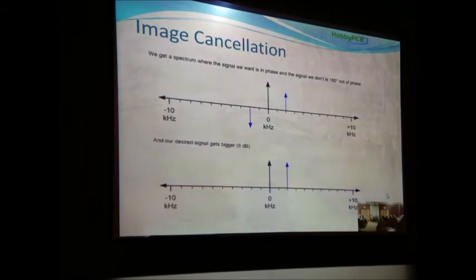Now, there were analog implementations of this. They called this the phasing method of decoding and encoding single sideband. But it was difficult to implement. Even a slightly off in the phase change, the image rejection was really, really poor. But when we do it in the digital domain, we can get incredible image rejections out of it.